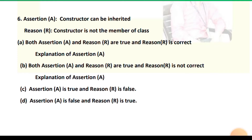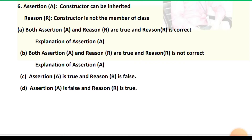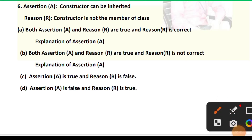Question 6 — Assertion: A constructor can be inherited. Reason: A constructor is not a member of the class. Constructors cannot be inherited, so the assertion is false. However, the reason is correct — constructors are not members of a class; only variables and methods are members. So option D is correct: assertion is false and reason is true.